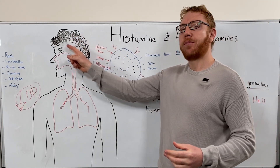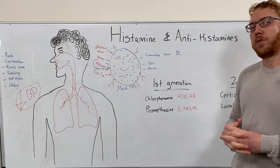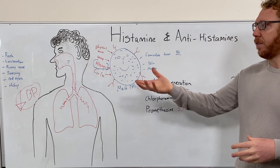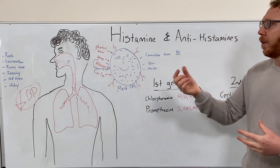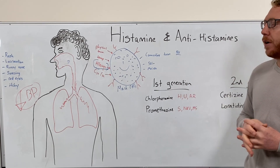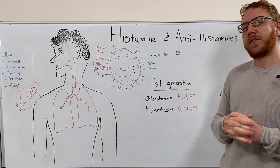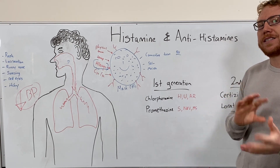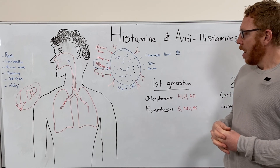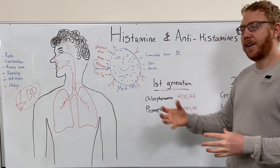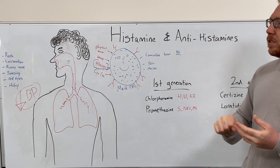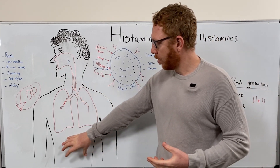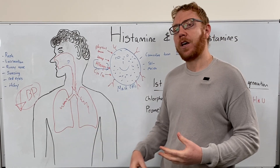Because first generation antihistamines cross the blood-brain barrier, they can be used for insomnia or to help people sleep, and sometimes in children with cough medications. Because these drugs aren't super selective, they can act on other receptors, most notably muscarinic receptors of the parasympathetic nervous system. This means they can also be used for nausea, vomiting, and motion sickness. However, binding to muscarinic receptors creates additional side effects: blurred vision affecting the pupil and accommodation reflex, dry mouth, constipation, and urinary retention.